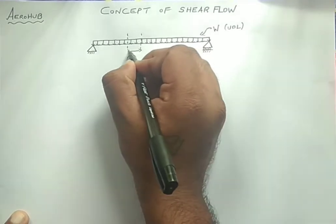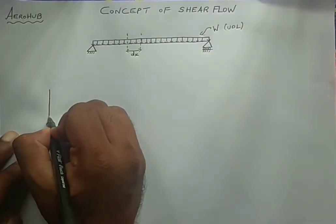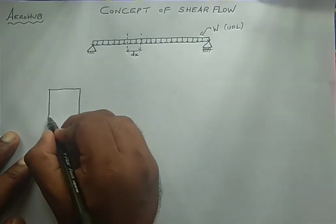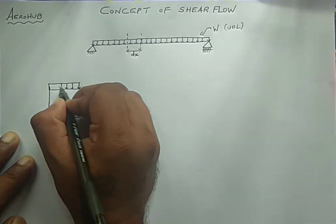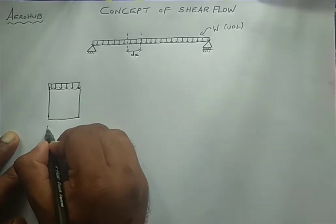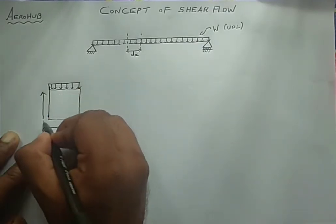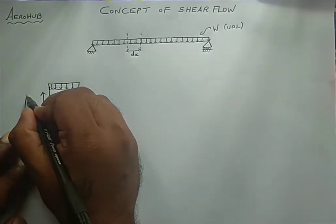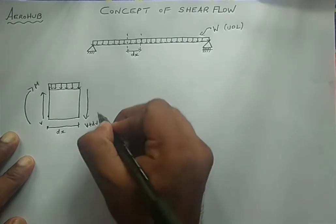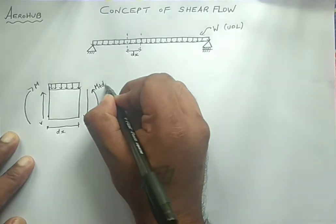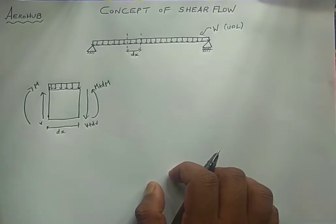We take a small section of the beam of length dx. We have a UDL on the top of this beam, and the total length here is dx. There is a shear force V acting at one end and a moment M in the clockwise direction. On the other side we have a shear force V plus dV and a moment M plus dM. We discussed this in the last lecture and from this diagram we found the relationship between bending moment and shear force.